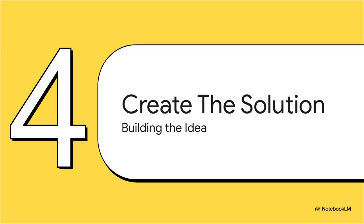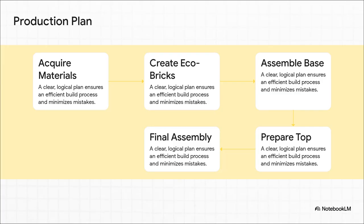And that brings us to the part everybody gets excited about: the build phase, or criterion C. This is where all the plans and the research and the drawings finally become a real, physical thing. It's time to get hands-on. A good build always starts with a good plan. The student laid out a really clear, logical process. First, get the materials. Then make the eco-bricks by stuffing the bottles with plastic waste. Then assemble the base, get the top ready, and finally put it all together. It's like a recipe that keeps things efficient and helps you avoid mistakes.